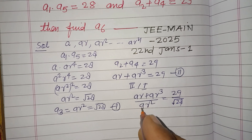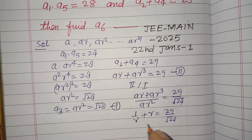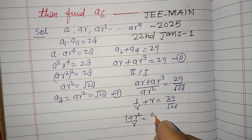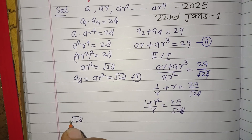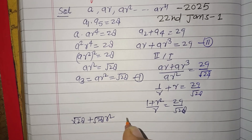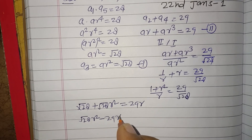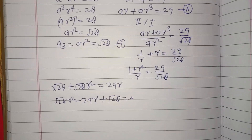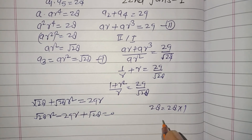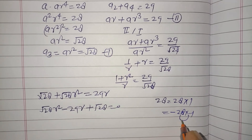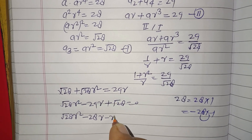After cancellation, we get (1/r) + r = 29/√28, that is (1 + r²)/r = 29/√28. Cross-multiplying: √28·r² - 29r + √28 = 0. This is a quadratic. Multiplying √28 × √28 gives 28, so the factors are 28 and 1, which add to give 29. So: 28r² - 29r + 1 = 0 effectively, giving roots.